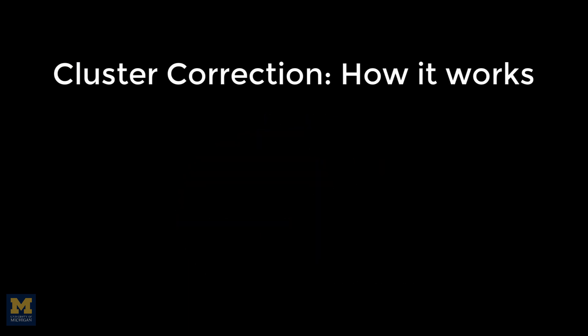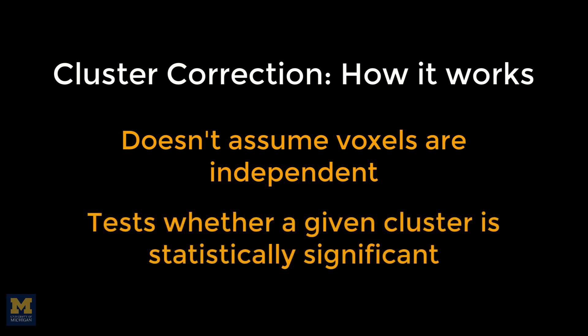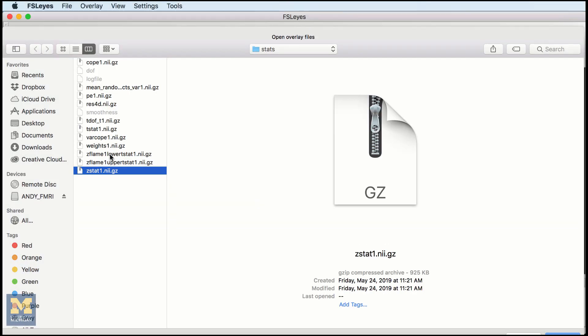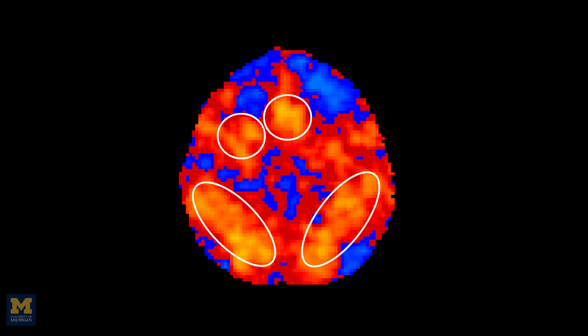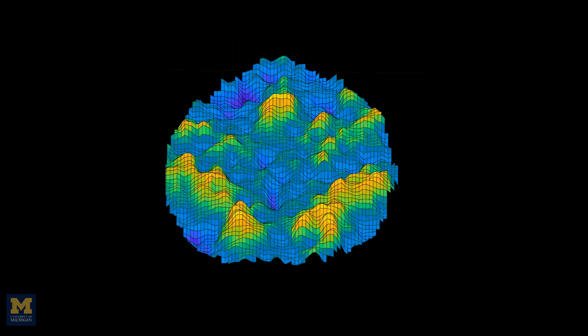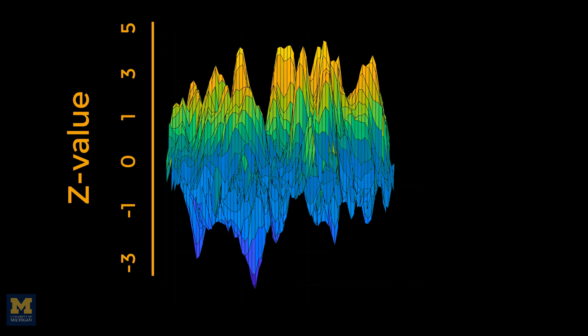Cluster correction takes advantage of the fact that the voxels in a typical dataset are not completely independent. Instead of testing each voxel individually, clusters of voxels are tested for significance. We can think of the clusters of voxels as mountain ranges, where the height of an individual voxel is determined by its z-value. The threshold we apply is a cross-section through the mountains at a certain height — for example, a z-value of 3.1, corresponding to a p-value of .001.